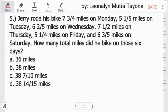Number 5. Jerry rode his bike 7 and 3/4 miles on Monday. 5 and 1/5 miles on Tuesday. 6 and 2/5 miles on Wednesday. 7 and 1/2 miles on Thursday. 5 and 1/4 miles on Friday. And 6 and 3/5 miles on Saturday. The question is how many total miles did he bike on those 6 days? Total means we will just add them.